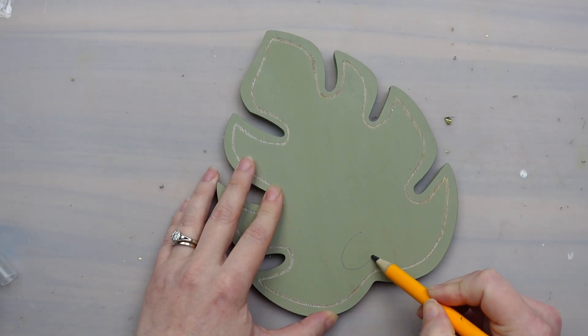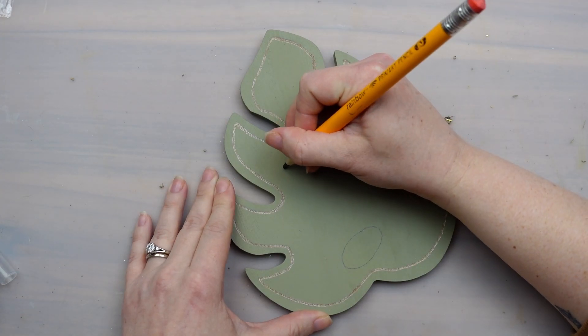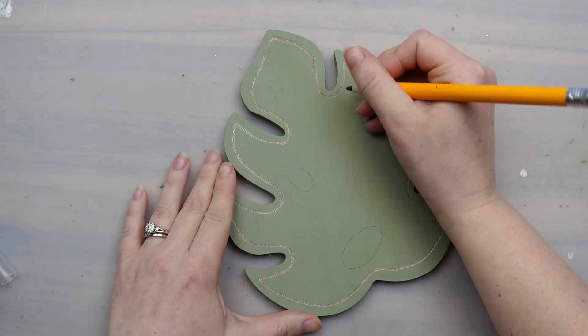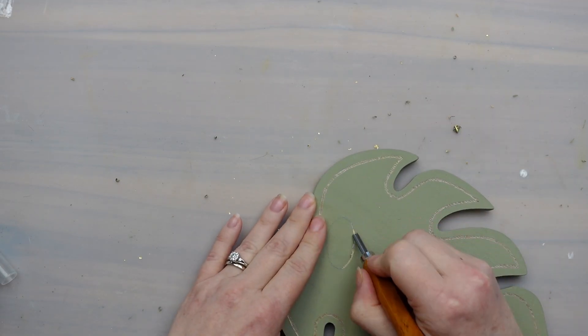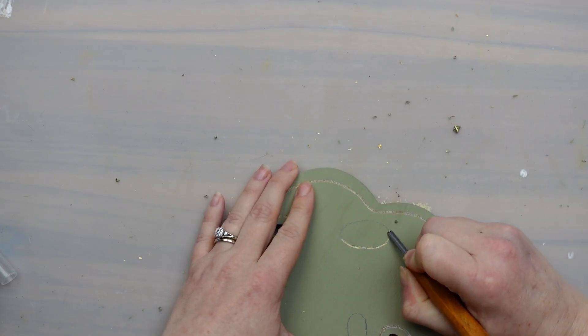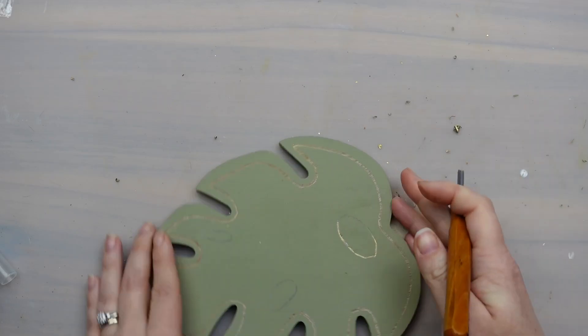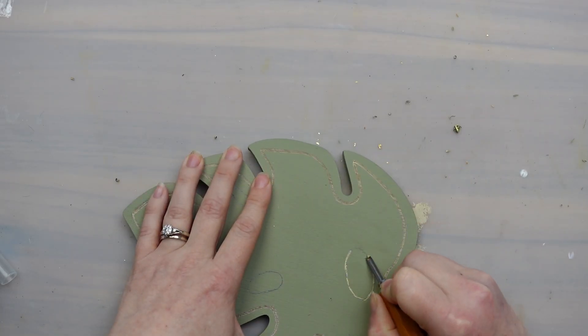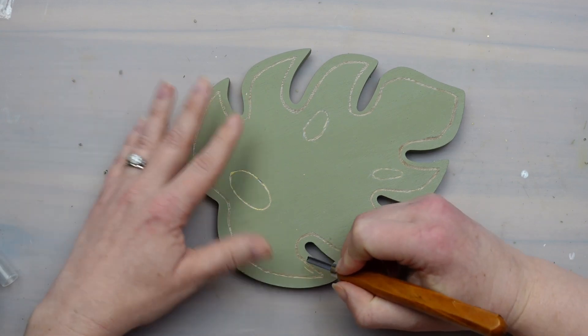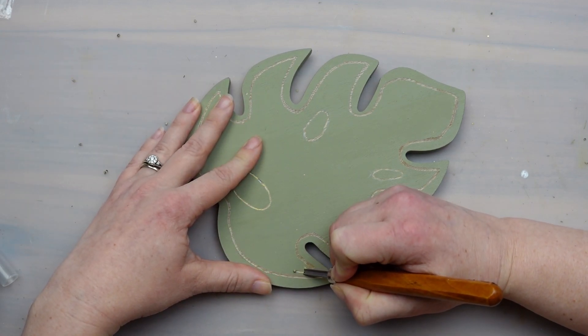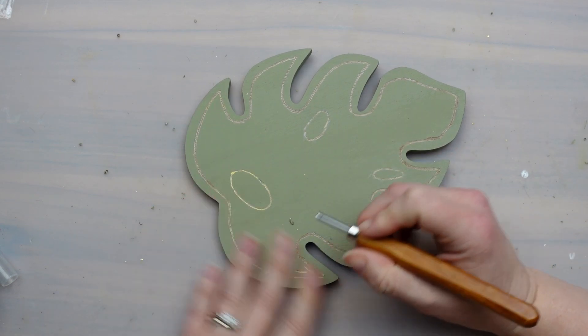Once the outline was done, I drew a few circles to add the fenestrations that you'd see in a real monstera leaf. I made sure one of the circles was covering that joint compound filled section so that it wouldn't look different if I carved out that area. Then again, I took my carving tool and outlined those sections. After that, I filled in the whole leaf with little carved out lines. I wanted them to flow with the leaf and not put too much thought into where each line went.